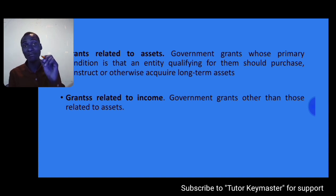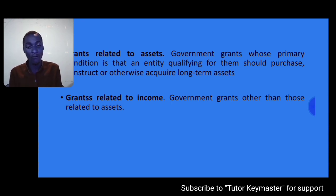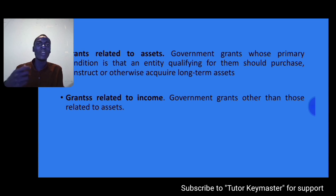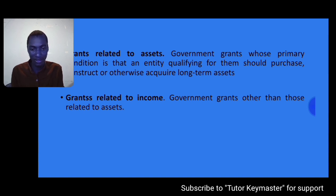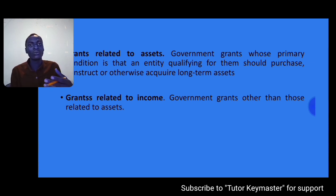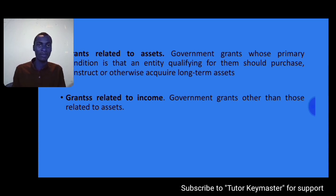We also have non-monetary government grants. These occur when government grants take the form of a transfer of a non-monetary asset — for example, a government providing land to an entity, or providing IT equipment to schools. In these cases, no cash is transferred to the entity. These grants are classified as non-monetary government grants.